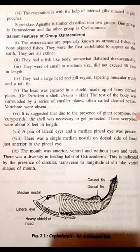Super class Agnatha is further classified into two groups. The salient features of Ostracodermi: the group Ostracodermi are popularly known as armored fishes or bony-skinned fishes. They were the first vertebrates to appear on the earth. They are all extinct.